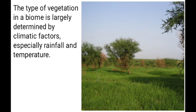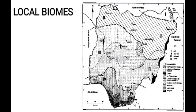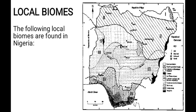The type of vegetation in a particular biome is determined by the amount of rainfall and the temperature of that biome. Regions all over the world having similar climatic conditions have similar biomes. Let's look at the local biomes that we have in Nigeria. We have at least four types of biomes in this country.